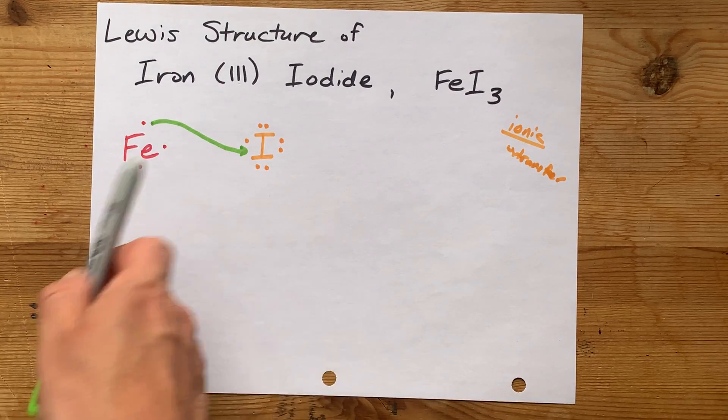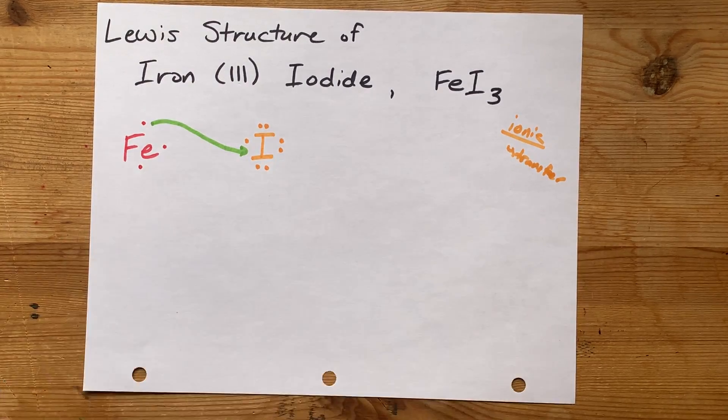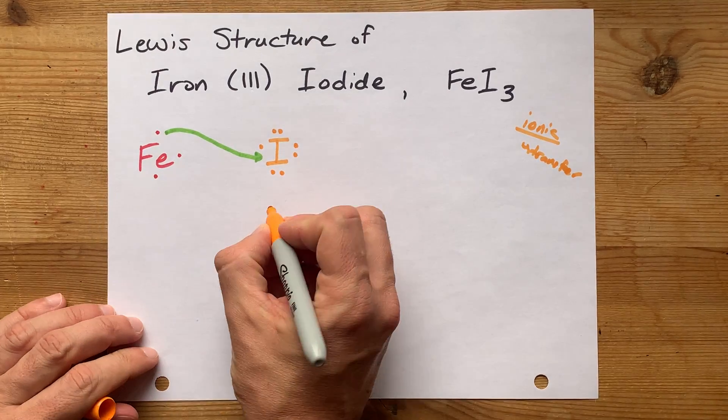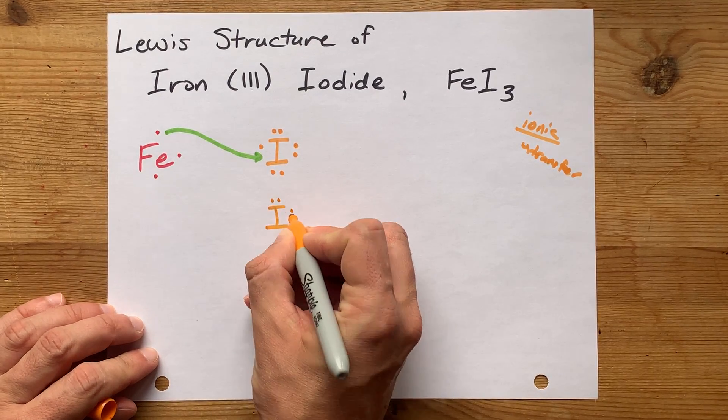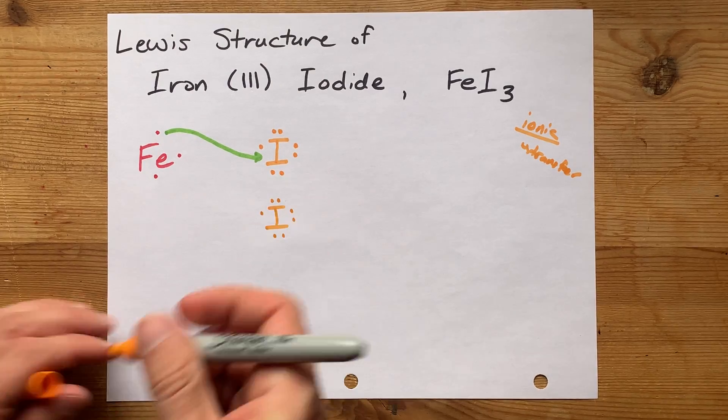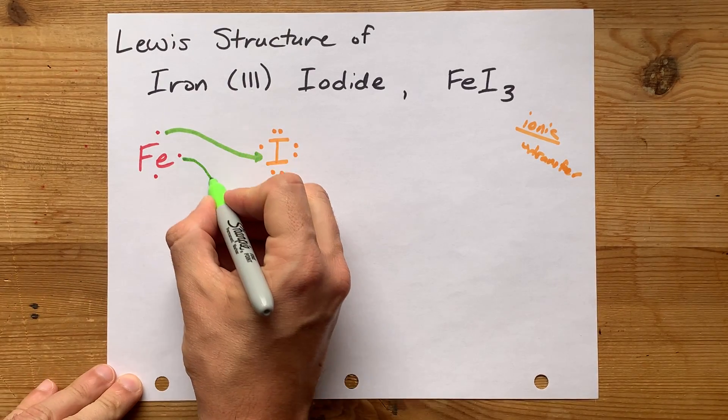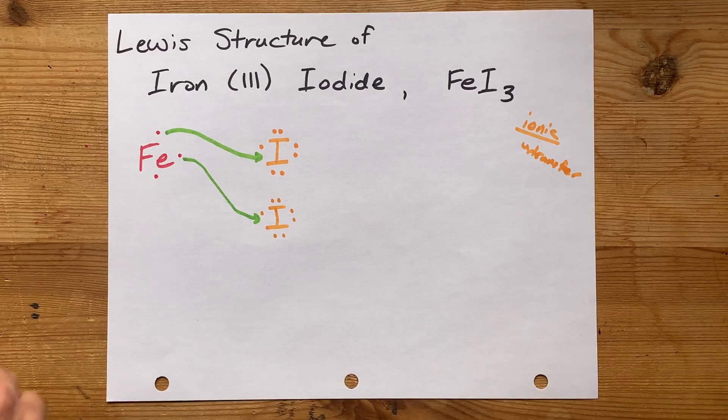But iron still has 2 extras. Where are they going to go? Well, one option is that we have another iodine here with its 7, and another electron from iron can go to complete its octet.